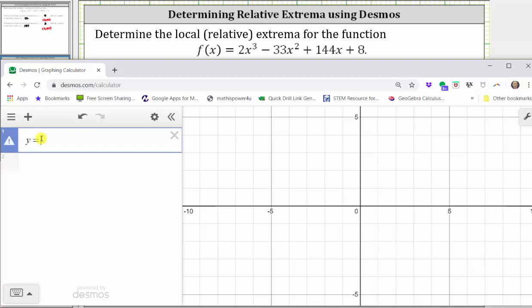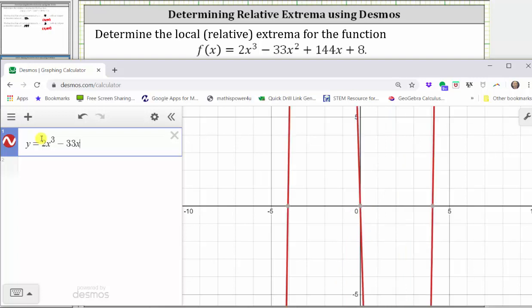Let's enter y equals 2x. To enter the exponent of three, we press shift six, three, right arrow, minus 33x, shift six two, right arrow, plus 144x, plus eight.